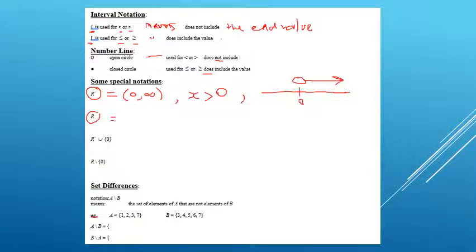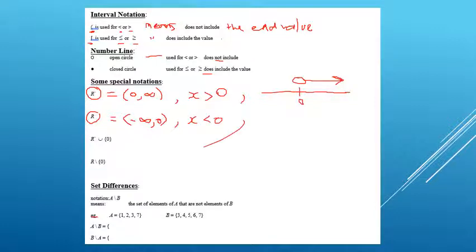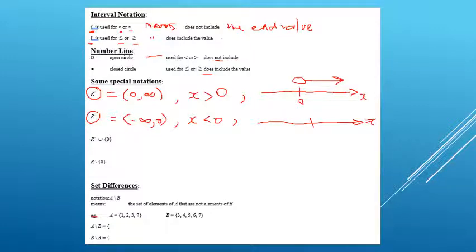R minus is almost the opposite — this time we're going down to negative infinity. In interval notation, we write the most negative number first: negative infinity to zero, but not including zero. This is the same as saying x is less than zero. On our number line, zero is the key point, with an open circle and anything to the left.